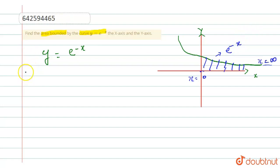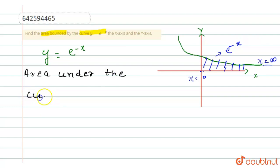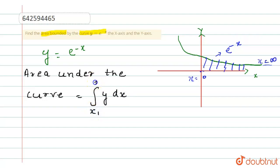We know that area under the curve is equal to integration of y dx from x1 to x2, where x1 is equal to 0 and x2 is equal to infinity.